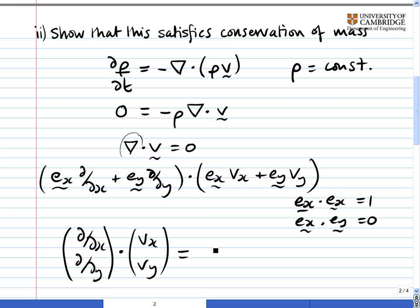And you can see straight away that that simplifies to dvx by dx plus dvy by dy equals zero if it's to satisfy conservation of mass.